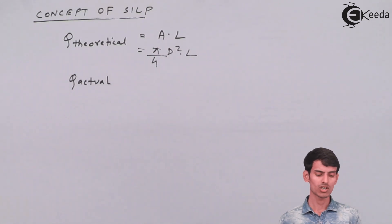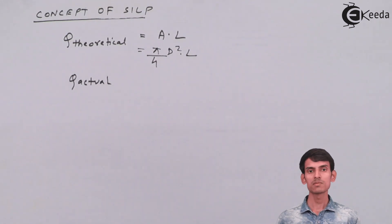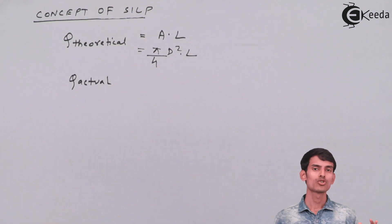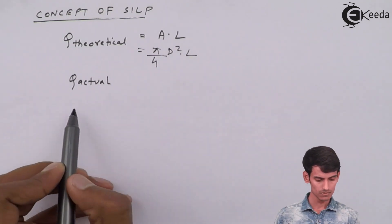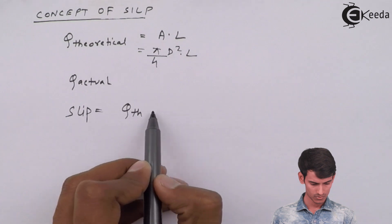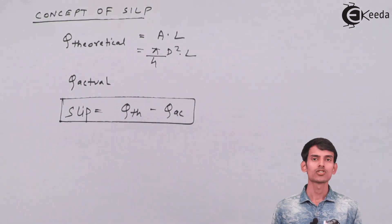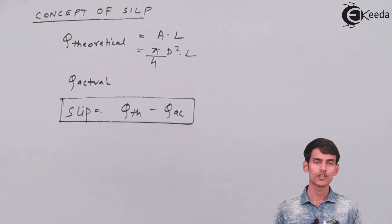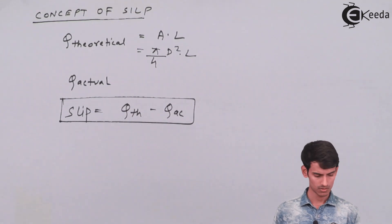Slip exists because there is a difference between actual and theoretical discharge — theoretical is more than actual. The amount of discharge you lose due to leakages and losses is slip. So slip = Q_theoretical − Q_actual. That is all about slip.